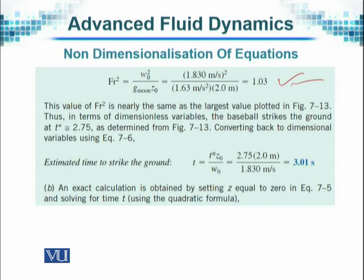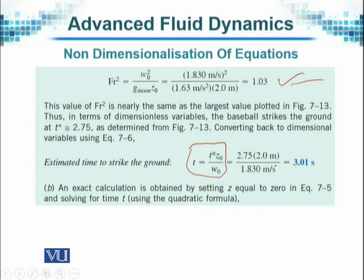Converting back to the dimensional variable, we know that the scaling variable for time gives us a scaling ratio. When we substitute the values — t* equal to 2.75, z₀ equal to 2 meters, divided by w₀ equal to 1.83 meters per second — this gives us a value of 3.01 seconds.